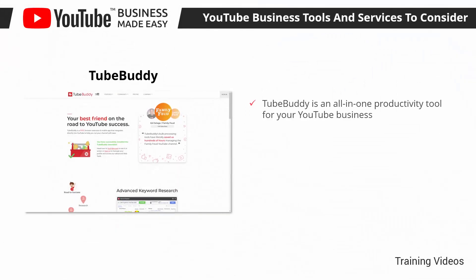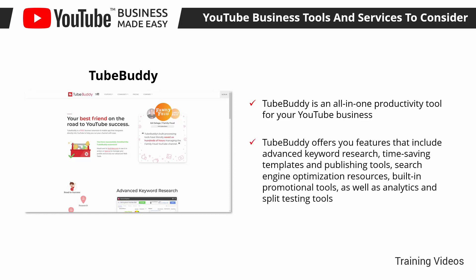TubeBuddy is an all-in-one productivity tool for your YouTube business. It can help you organize all your YouTube activities under a single dashboard, and it helps you understand your audience, optimize your content, and improve your SEO strategy. TubeBuddy offers features that include advanced keyword research, time-saving templates and publishing tools, search engine optimization resources, built-in promotional tools, as well as analytics and split-testing tools.